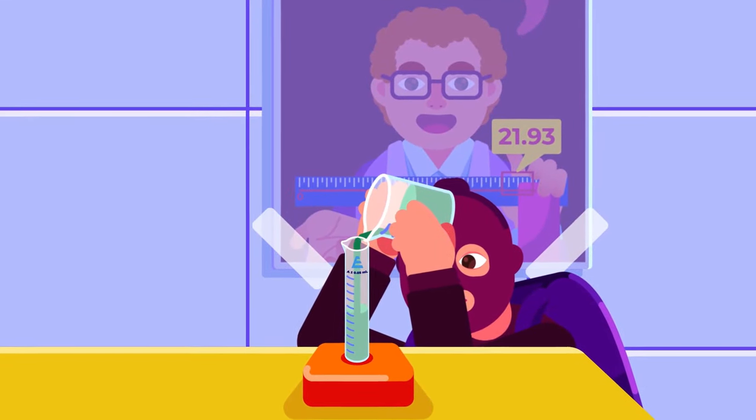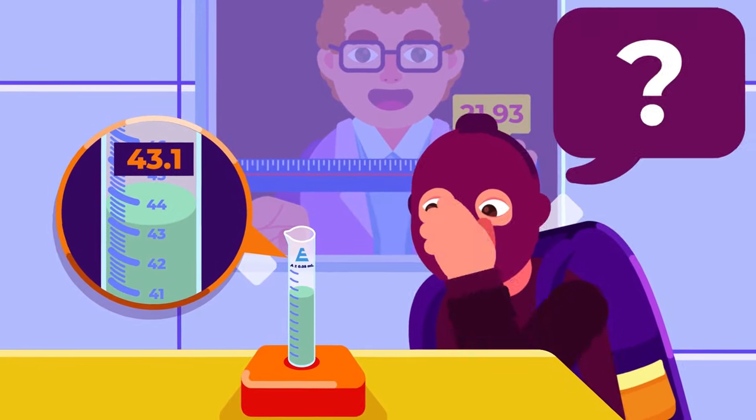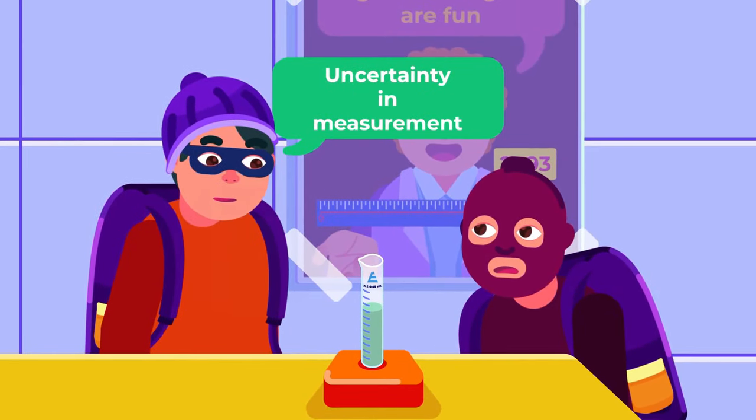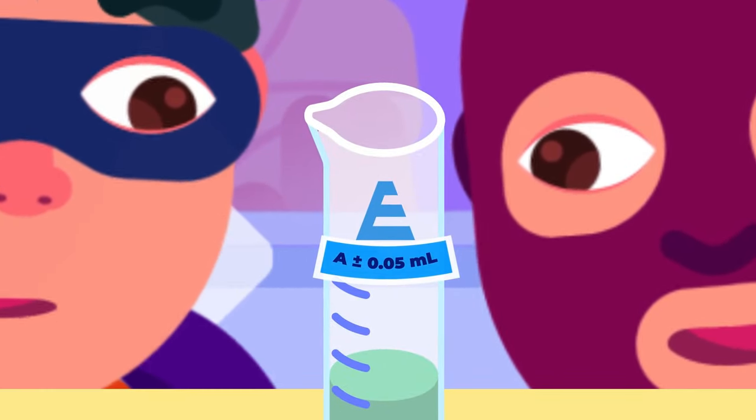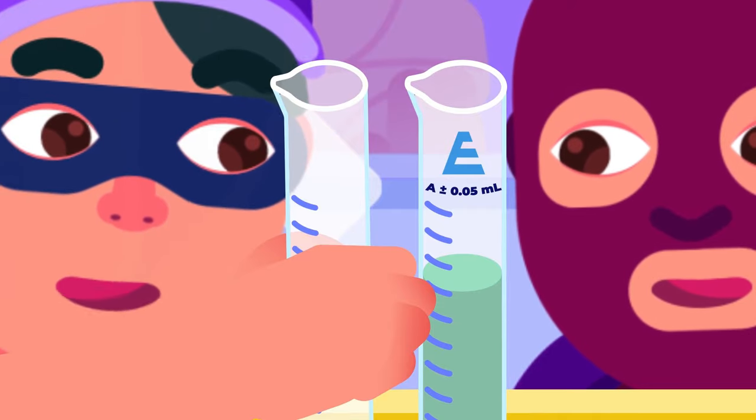However, each instrument can yield a slightly different output reading than others, also called the uncertainty in measurement. It's usually shown in the form of percent error or fractional error, but sometimes this uncertainty is not explicitly stated.